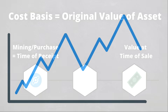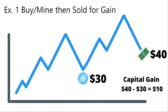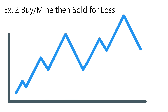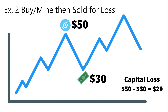Let's look at some examples. Say that you mined or bought one token of HNT at a market value of $30, and then sold at a market value of $40. You would record a capital gain of $10 on this sale — your cost basis was lower than the selling value, so you incurred a capital gain. Example 2: if you buy or mine and then sold for a loss — you mined or bought one token of HNT at a market value of $50, and then sold at a market value of $30 — you would record a capital loss of $20 on this sale. Your cost basis was higher than the selling value, so you incurred a capital loss.